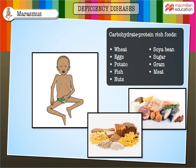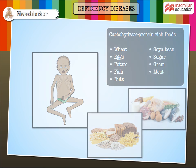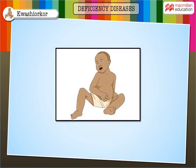A child suffering from marasmus should be fed with food rich in carbohydrates and proteins, such as wheat, soya bean, eggs, sugar, potato, gram, fish, meat, and nuts.